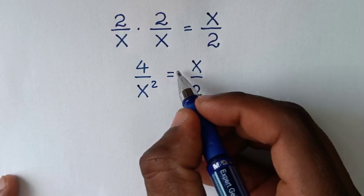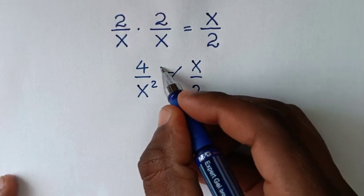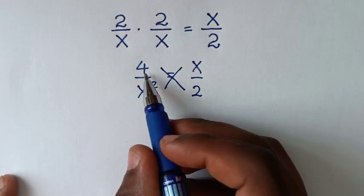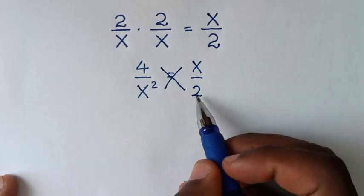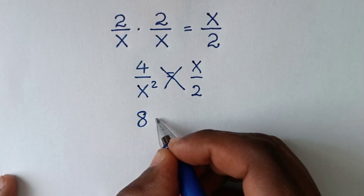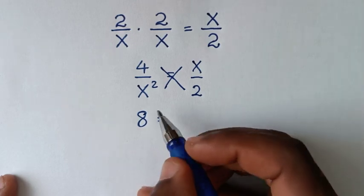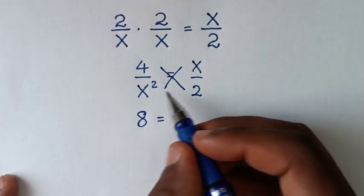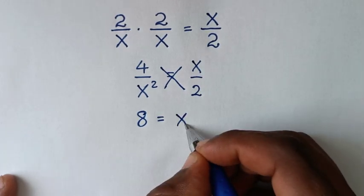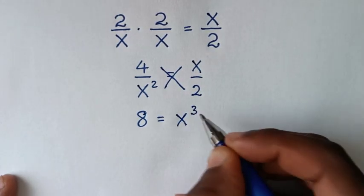Then from here we'll cross multiply. So it will be 4 times 2, which is 8, is equal to x squared times x, which is x cubed.